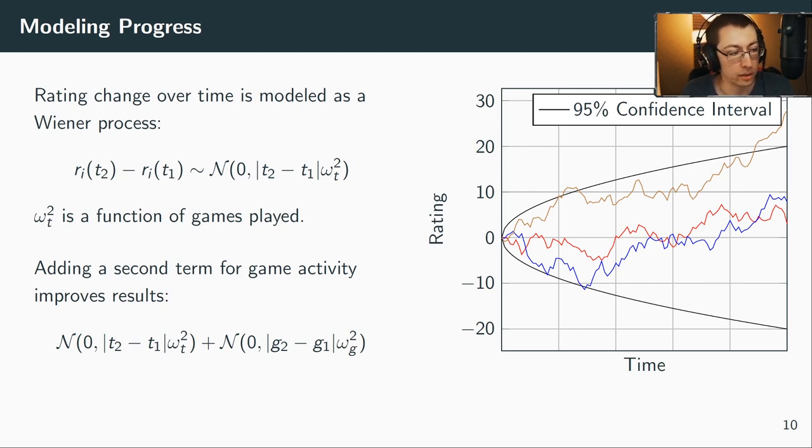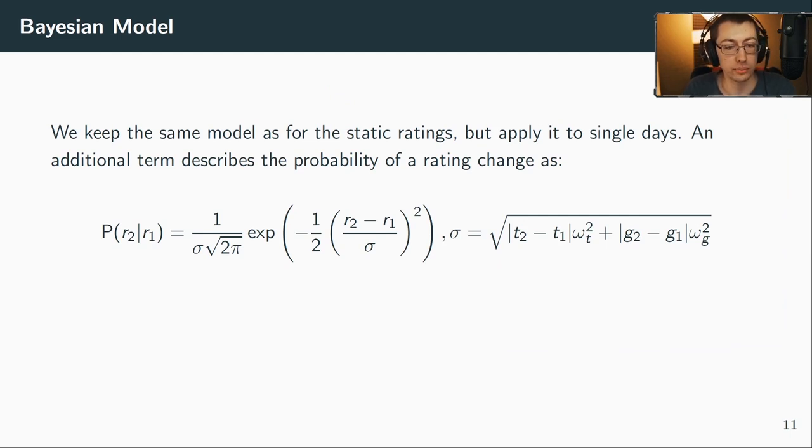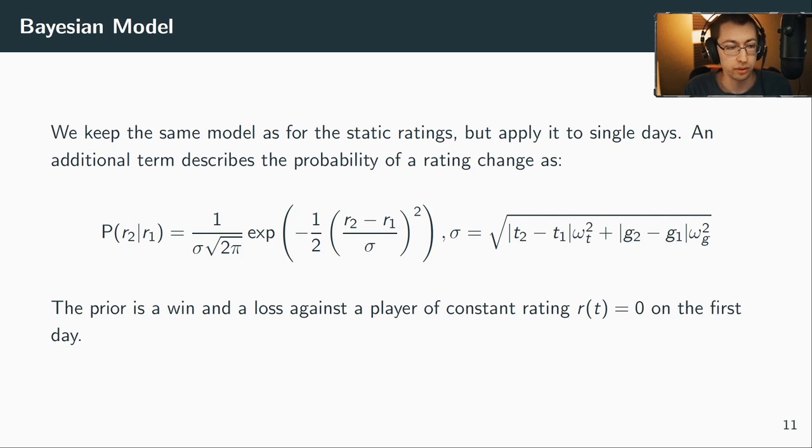Okay, so now we need to expand the Bayesian model a bit. We can assume for every day that the player plays on, we can use the static model for that day. So now we have these days for which we can solve, but we need to connect them somehow. We do that using the model I just presented. We say the likelihood of a rating changing depends on how much time has passed between two days, and then we use a normal distribution. So here you can see the normal distribution, and the sigma is directly the square root of the time and the number of games played. The prior remains a win and a loss on the first day, so we just need the prior once, and then we connect each day to the previous and the following day using this normal distribution depending on how much time passed between the days.